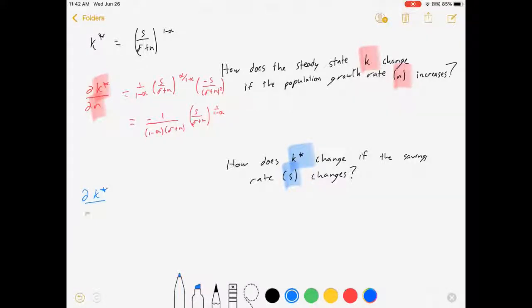dk, there's the k star, and there's the s. This is how we do comparative statics. We take the thing we're interested in and we take the derivative of it with respect to the change we're curious about.